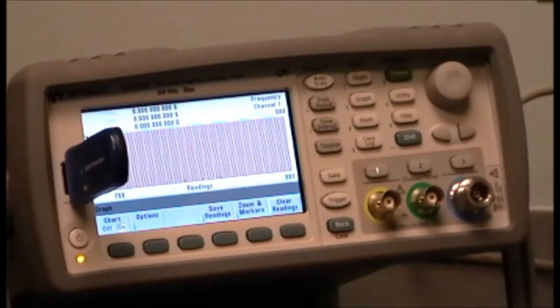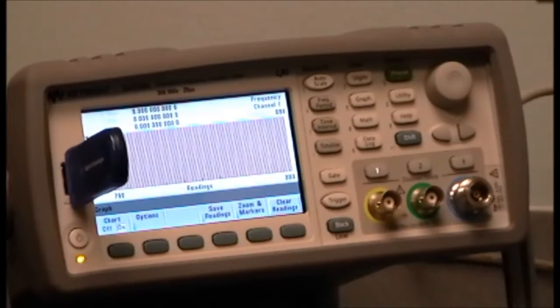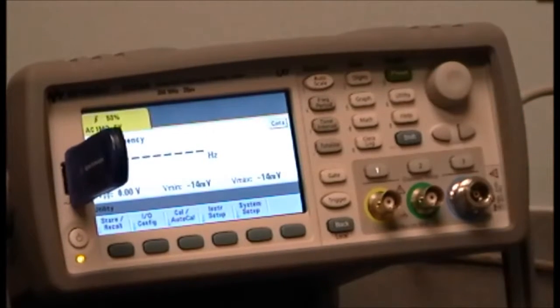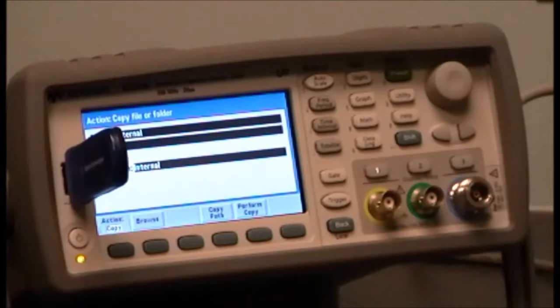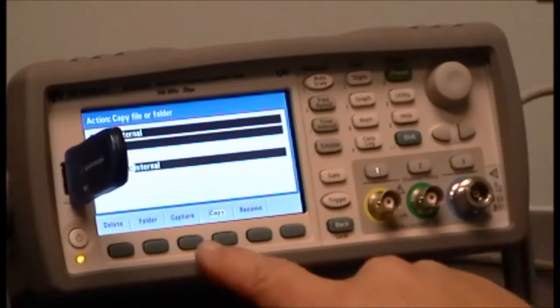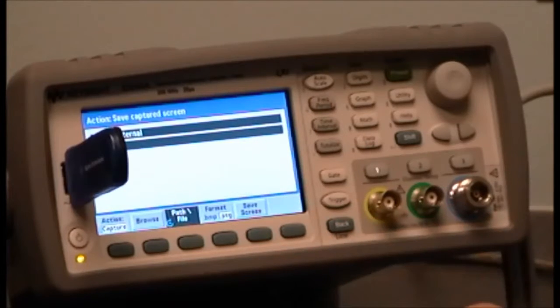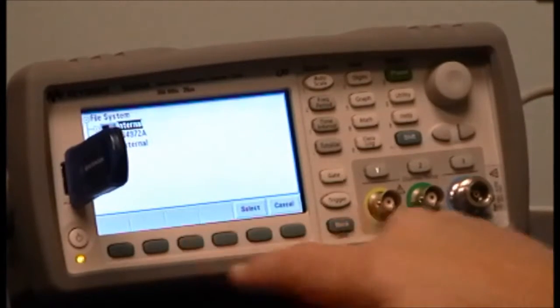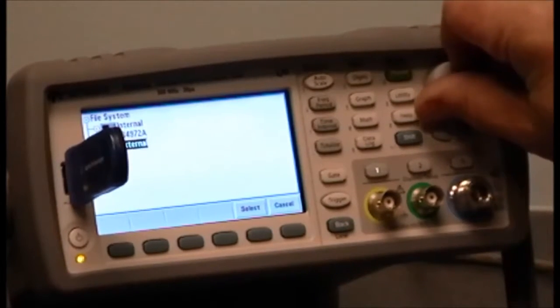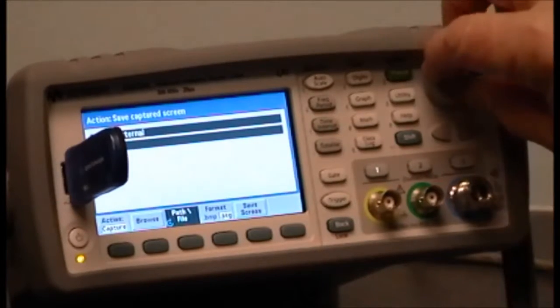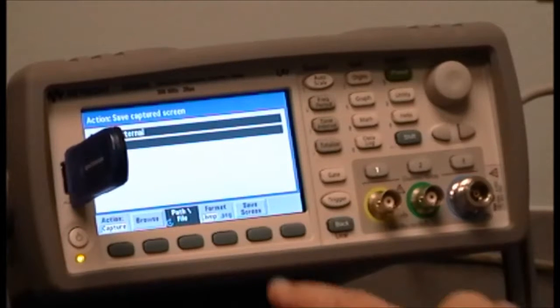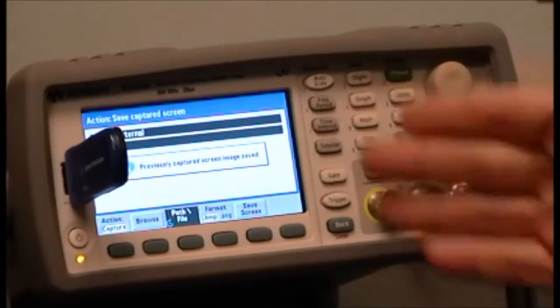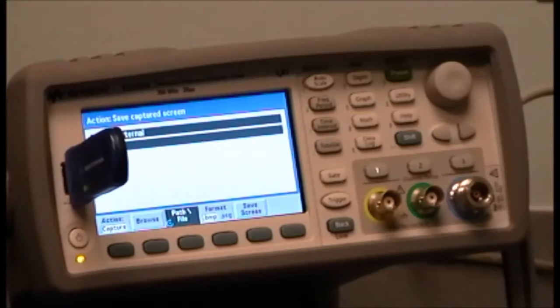In this particular instrument we have a utility key which you push and then again system setup, manage files, action again capture, select the path which would be external, name it again if you like, select the format and save the screen. Then it says the previously captured screen image is saved.